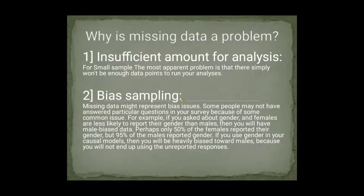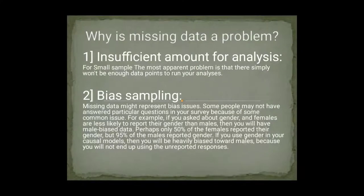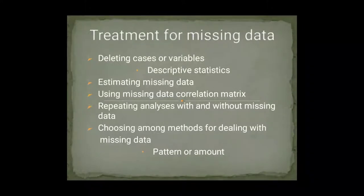The second problem is bias sampling. Missing data also represents bias issues. For example, if we talk about gender and females have reported much less as compared to males — if we are conducting a survey and females have participated much less compared to males — then our result will be biased towards males because females did not represent their issues. So the treatment for missing data is: we can do descriptive analysis again, delete some cases and variables, estimate the missing data, use correlation matrices for missing data, and repeat the analysis with or without missing data.